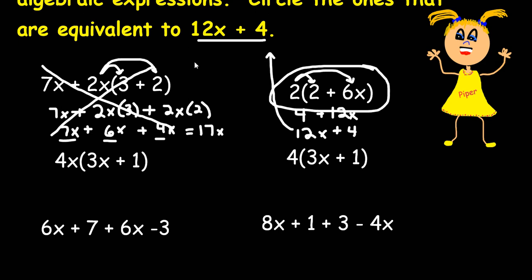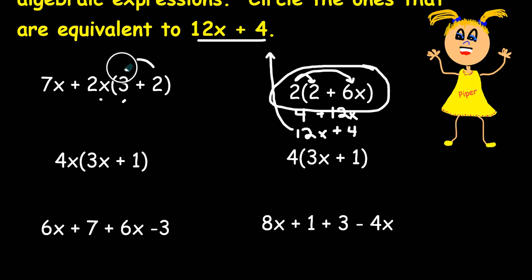The next one I'm going to erase some of my previous work so that I can solve this next problem or simplify I should say. Distribute multiplication to both terms in the parenthesis. 4x times 3x, 4 times 3 is 12 but we have x times x which would actually be x to the second power and 4x times 1 equals 4x. So this one is not equivalent because we got 12x to the second power plus 4x. I'm going to cross that one out.